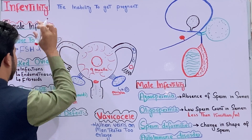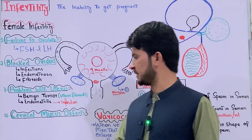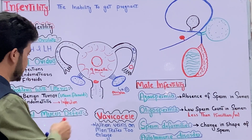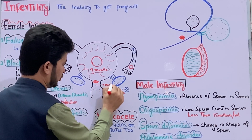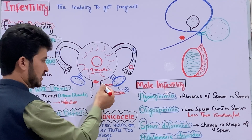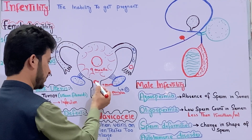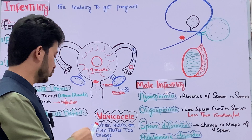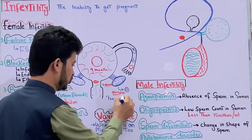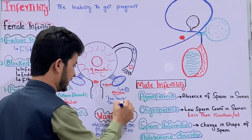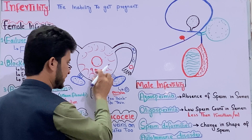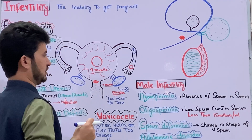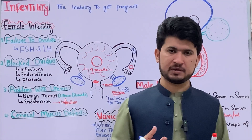Another cause of female infertility is cervical mucus defect. In the cervix region, mucus is normally present to facilitate sperm motility. If there is a defect in mucus secretion — either too thick or too thin — it can impair sperm movement and lead to infertility.